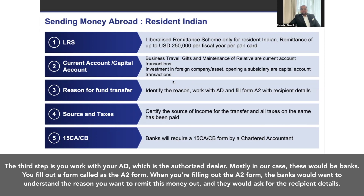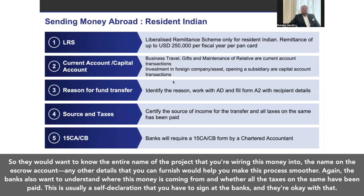The third step is you work with your AD — the authorized dealer, which in most cases would be banks. You fill out a form called the A2 form. When filling out the A2 form, the banks want to understand the reason you want to remit this money out, and they would ask for recipient details — the entire name of the project you are wiring the money into, the name on the escrow account, and any other details you can furnish will help make this process smoother. The banks also want to understand where this money is coming from and whether all taxes on it have been paid. This is usually a self-declaration that you sign at the bank.